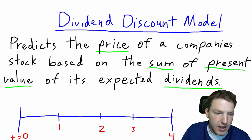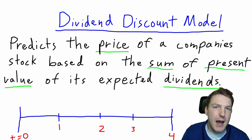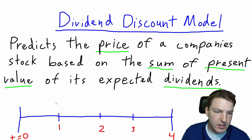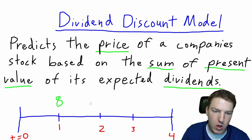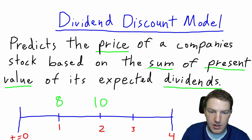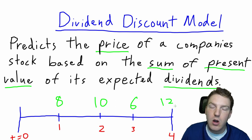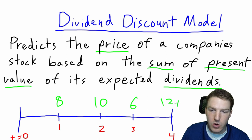Let's start off with the timeline. T equals zero means time equals zero, so this point on the timeline represents today. Let's say we're analyzing a stock that we expect to pay an eight dollar dividend at the end of year one, a ten dollar dividend at the end of year two, a six dollar dividend at the end of year three, and a twelve dollar dividend at the end of year four.